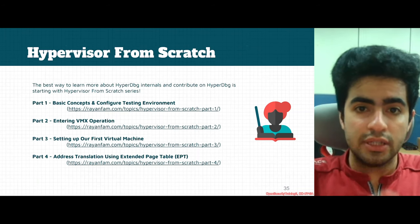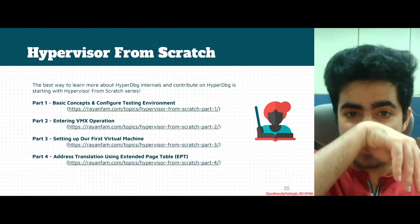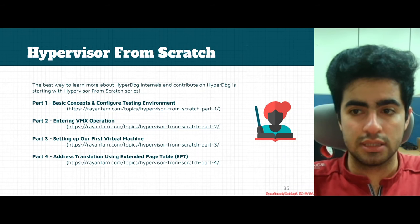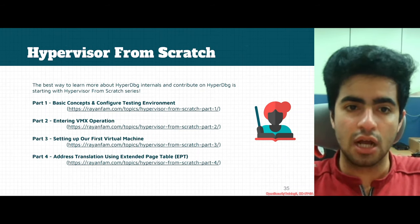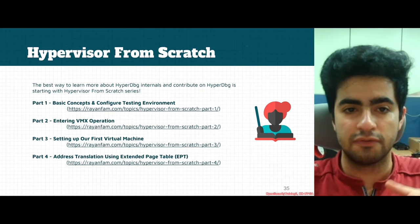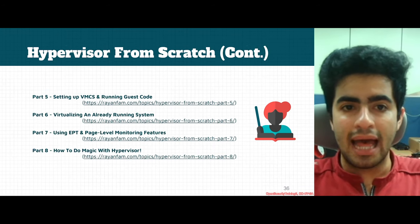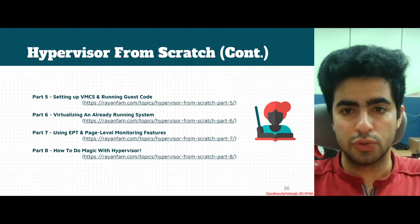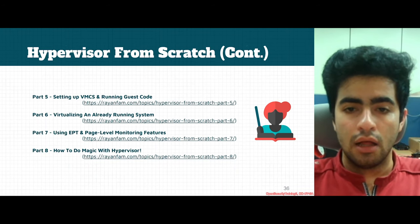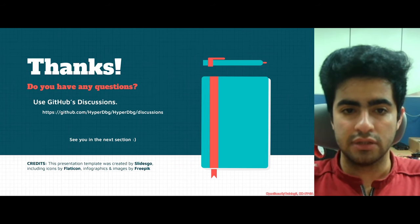The best way to learn HyperDBG internals and start contributing is to read Hypervisor from Scratch — a tutorial designed to teach hypervisor concepts. HyperDBG is mainly an extension of that project, built based on the Hypervisor from Scratch source code. Make sure to read it if you want to contribute. If you have any questions, you can ask in the GitHub discussions. Thanks a lot for watching, and I'll see you in the next section.